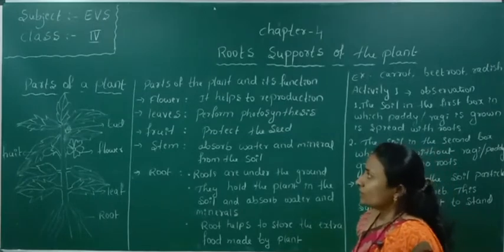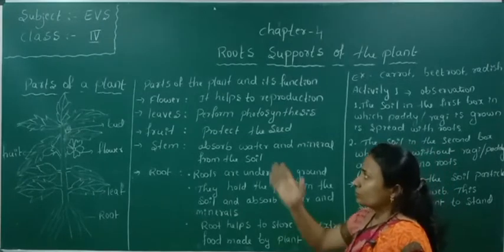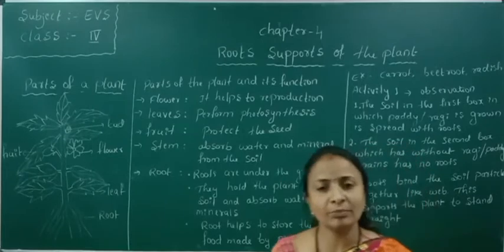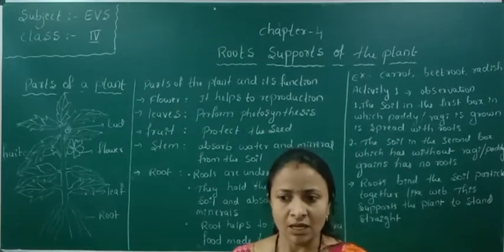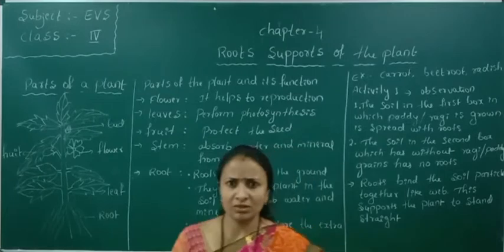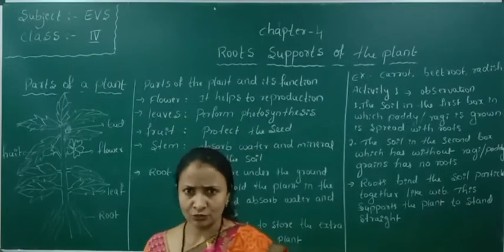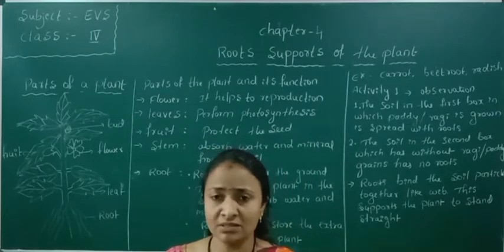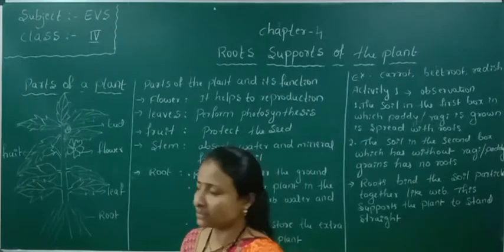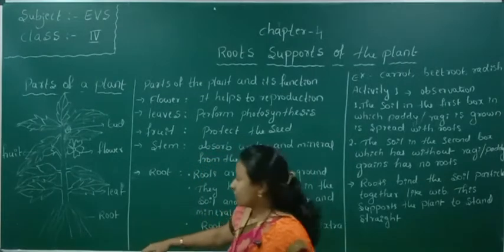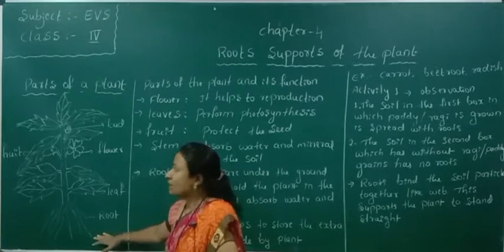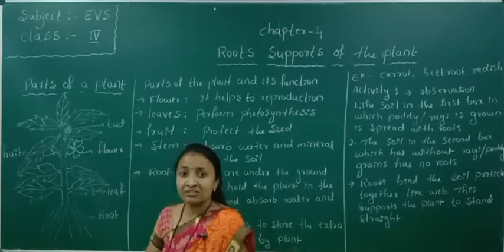Students, you have already learned about parts of the plant. How do roots support the plant? Generally you know that without roots the plant cannot grow. It is one of the basic and main parts. The root is the main part. It helps the plant stand straight.